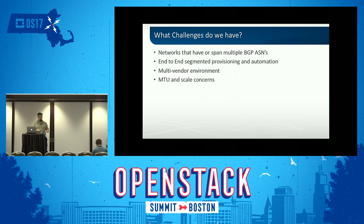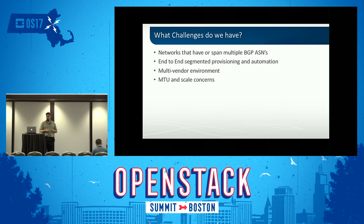We've already extensively deployed MPLS in our network. Another challenge is MTU size. We have to work down to the lowest common denominator, which is often the access node—the CMTS in the cable world or the DSLAM in the telco world. The CMTS today supports an MTU size of about 1527. If we want to put any tunneling behind it, we have to account for that overhead, otherwise customers can't do things like banking or day trading.